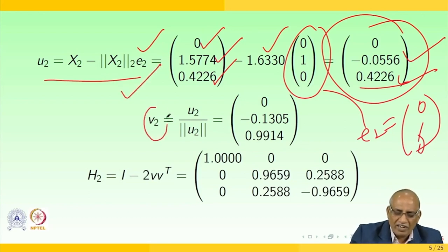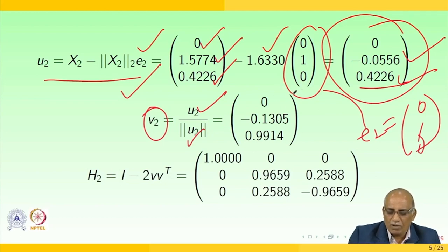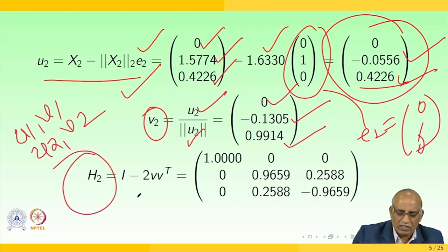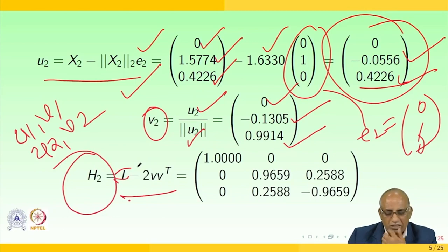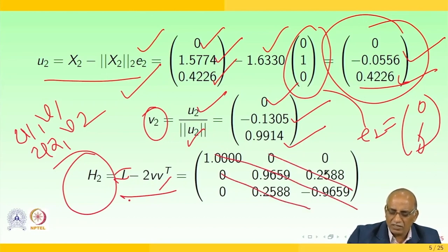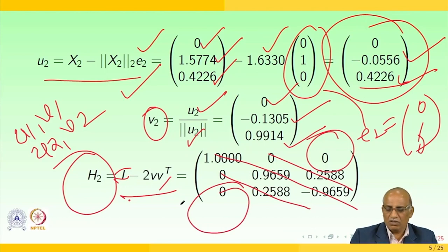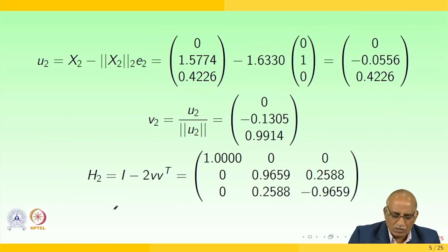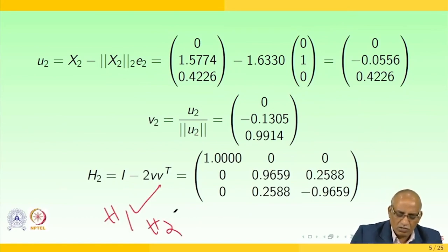Having U2, we can find V2 = U2 / ‖U2‖, which gives [0, -0.1305, 0.9914] transpose. Having computed U1, V1, U2, and V2, I can now compute H2 = I − 2·V2·V2ᵀ. When I compute this, I get a specific matrix where certain entries are zero. So now both H1 and H2 are known.